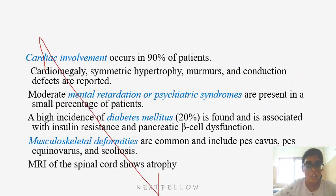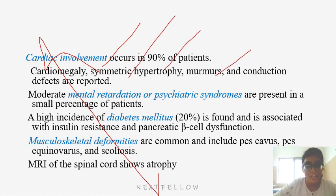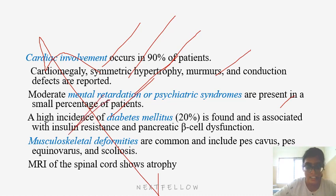Cardiac involvement occurs in 90% of patients; cardiomegaly, symmetric hypertrophy, murmurs, and conduction defects are reported. Moderate mental retardation or psychiatric syndromes are present in a small percentage. There is a high incidence of diabetes mellitus associated with insulin resistance and pancreatic beta cell dysfunction. Musculoskeletal deformities include pes cavus, pes equinovarus, and scoliosis.